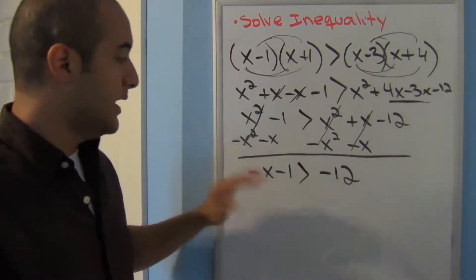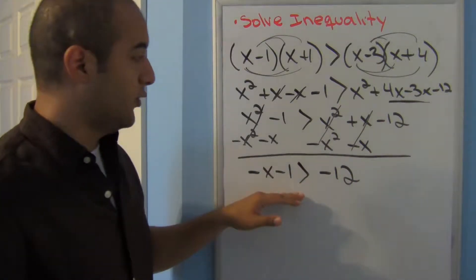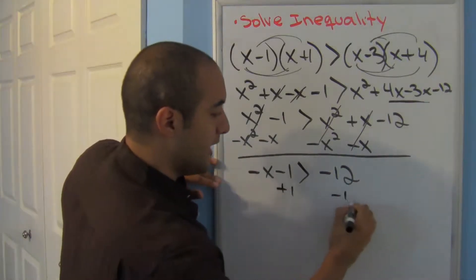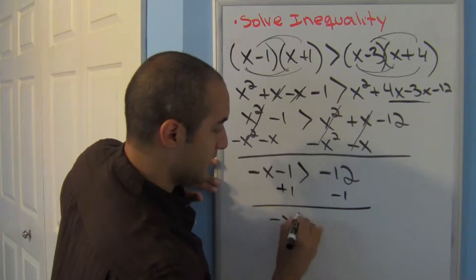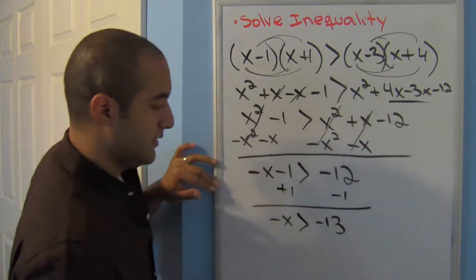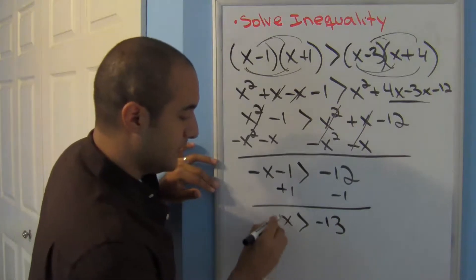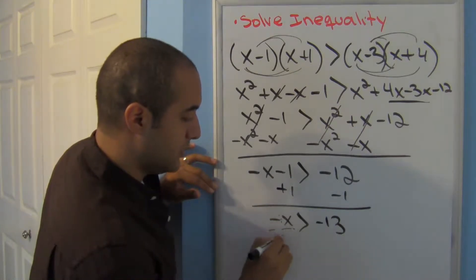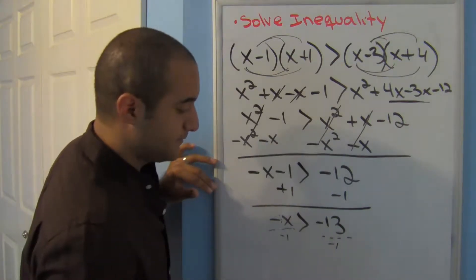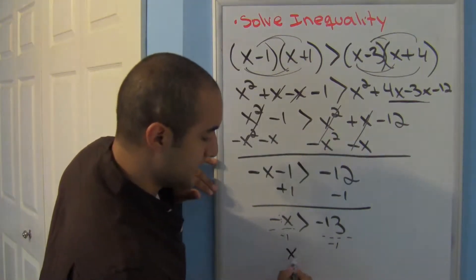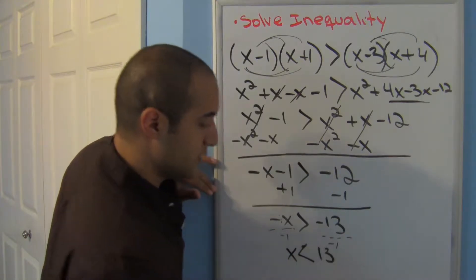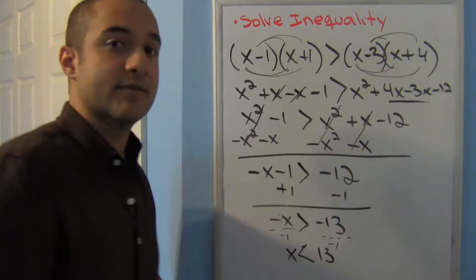That cleans things up a lot. I get rid of the negative 1 by adding 1 to both sides: negative x greater than negative 13. Dividing by negative 1 flips the symbol, so x is less than 13. That's my final answer.